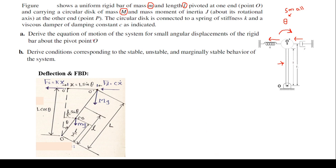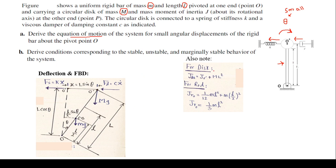To derive the equation of motion we use Newton's second law. Since the entire assembly rotates about point O, we apply the parallel axis theorem. The moment of inertia of the disk about point O is J_O' plus M·L², and the moment of inertia of the rigid rod about point O is (1/12)·m·l² + m·(l/2)², which simplifies to (1/3)·m·l².